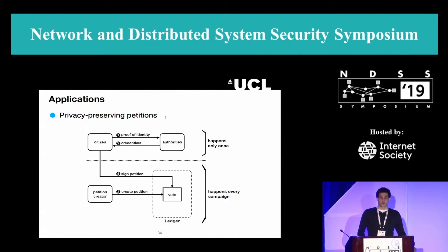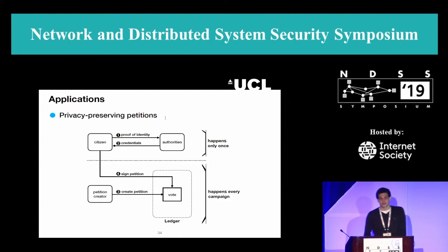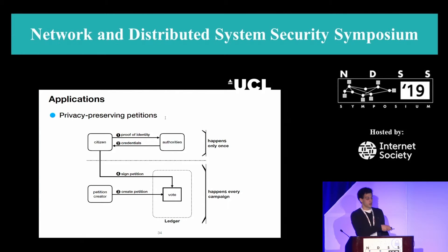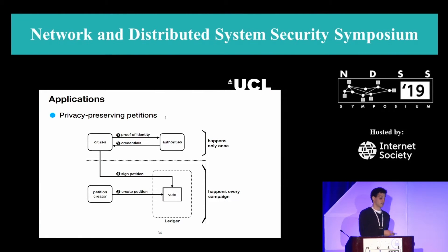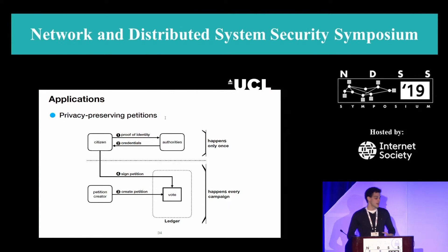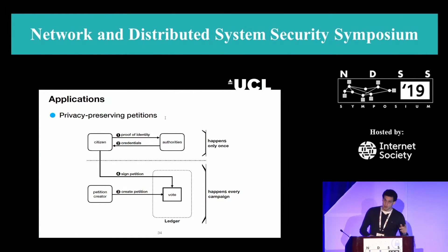Here is an example application we built on top of it. It's obvious that we should do privacy on blockchains. This example illustrates how it works. In the first phase — which happens only once — a citizen goes to some authorities, shows their identity offline or online, and receives back some credentials. Afterwards, anyone can go on the blockchain and create a new petition event specifying that whoever has credentials from a particular set of authorities can participate. Citizens can then come to the ledger and sign the petition, remaining unlinkable with the issuing phase. They can sign multiple petitions and still be unlinkable across campaigns.